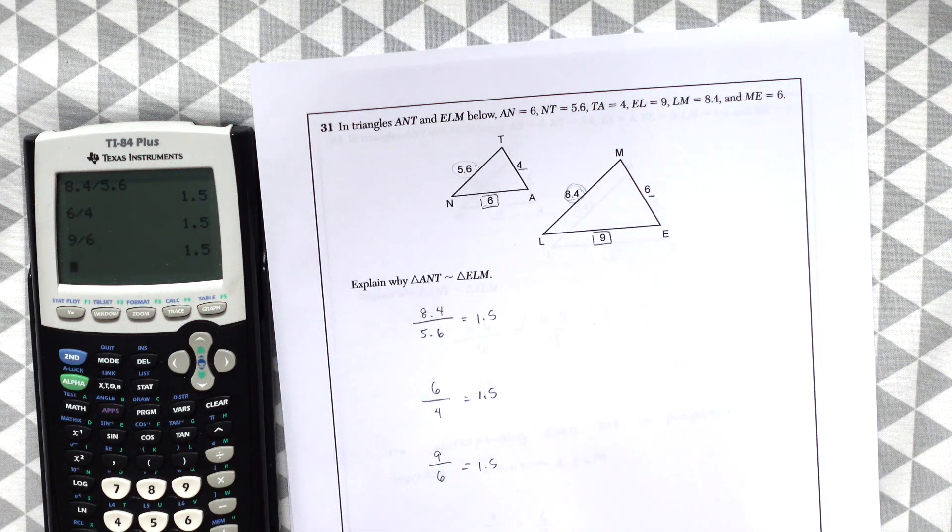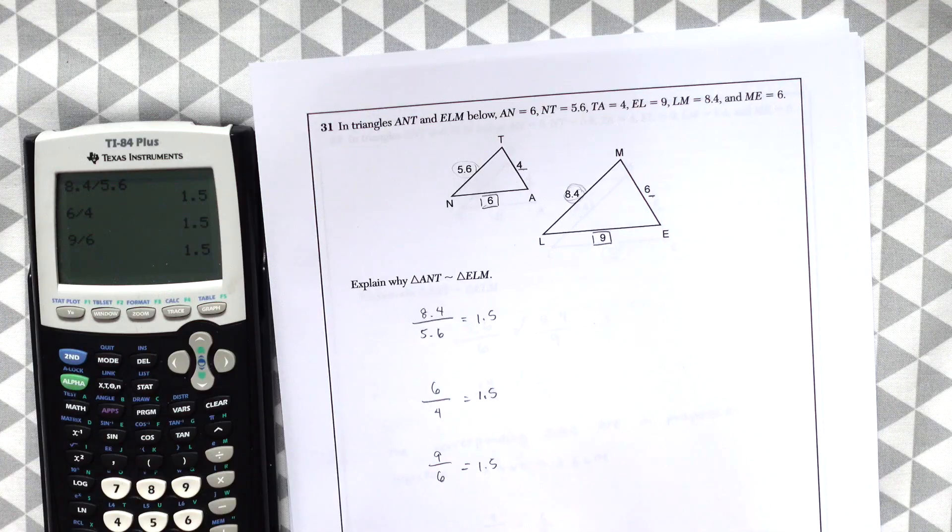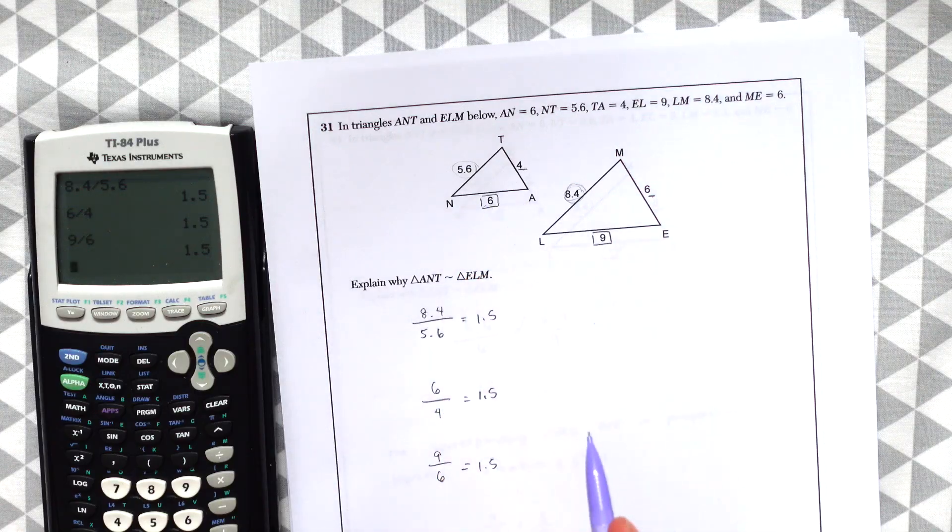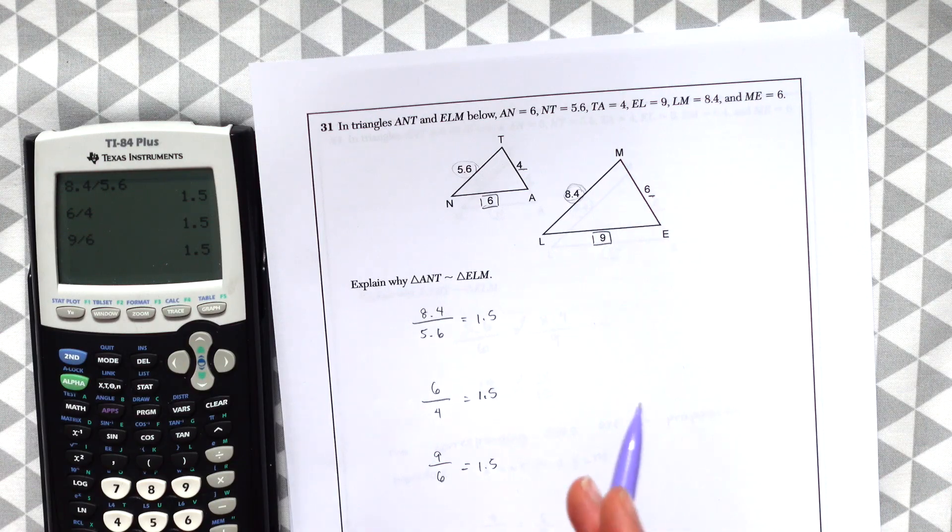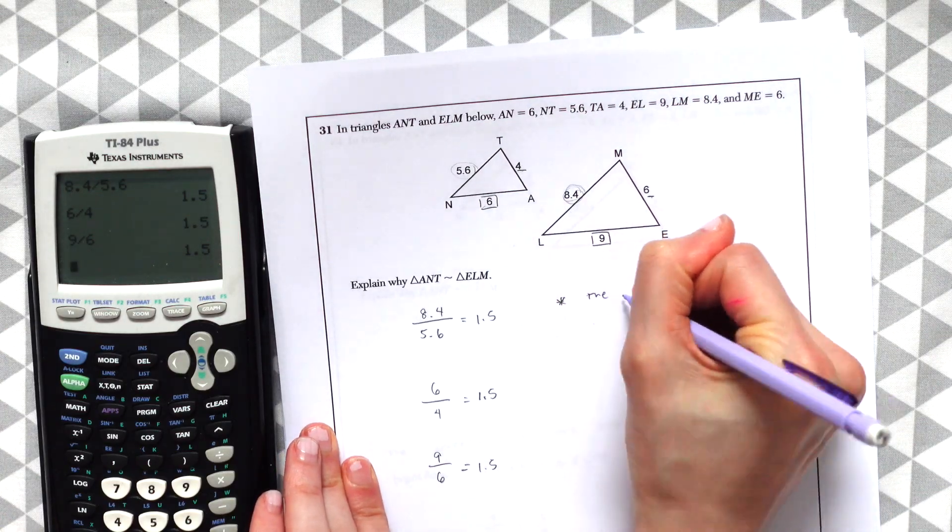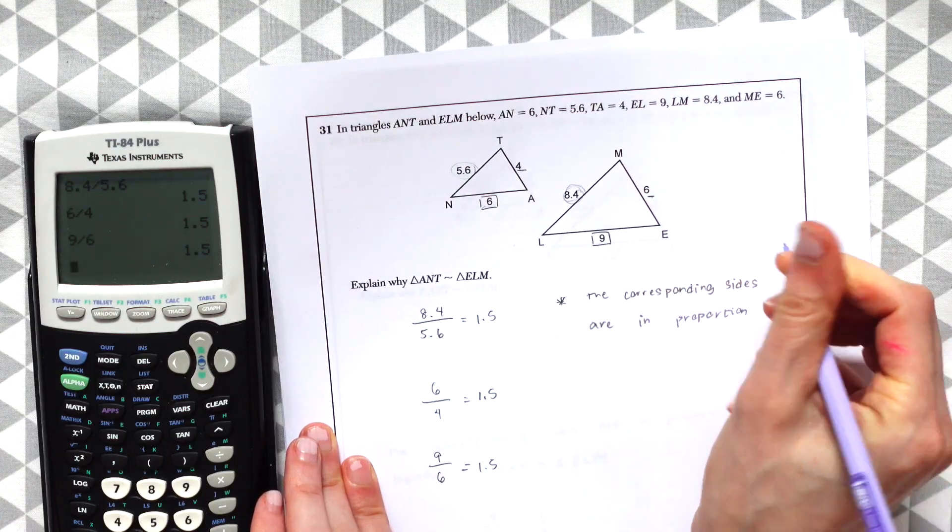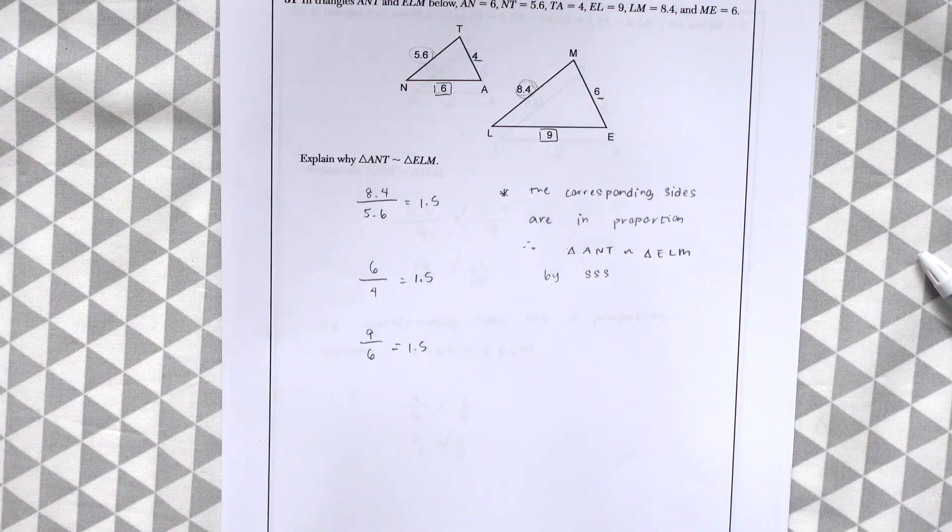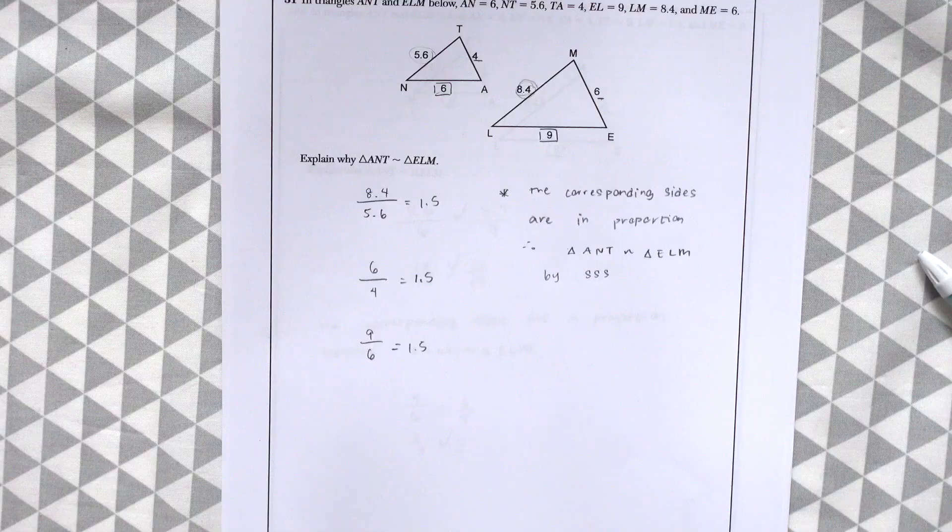Again, so because all of these ratios are equal, 1.5, 1.5, 1.5, we're multiplying each length times 1.5. We know that the sides are in proportion to each other and that these triangles are similar to each other. So we'll just need to sum that up. The corresponding sides are in proportion. Therefore, triangle ANT is similar to triangle ELM by side, side, side. And that's our answer.